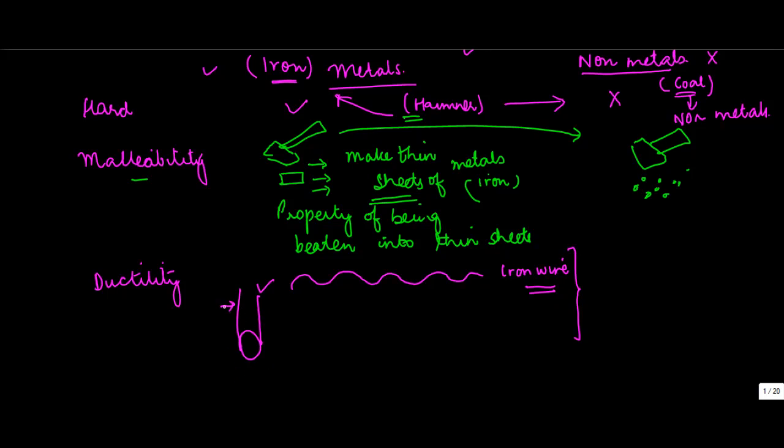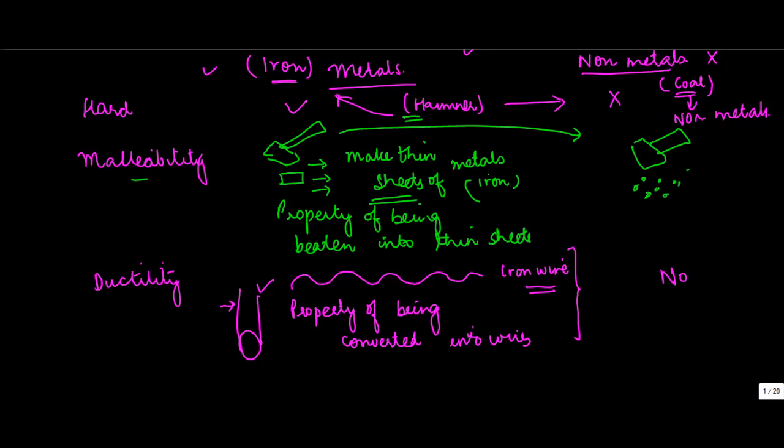By ductility, what we mean is the property of being converted into wires. Can you make a wire of coal? Answer is no, right? So we say that non-metals are not ductile, which means they cannot be converted into wires.